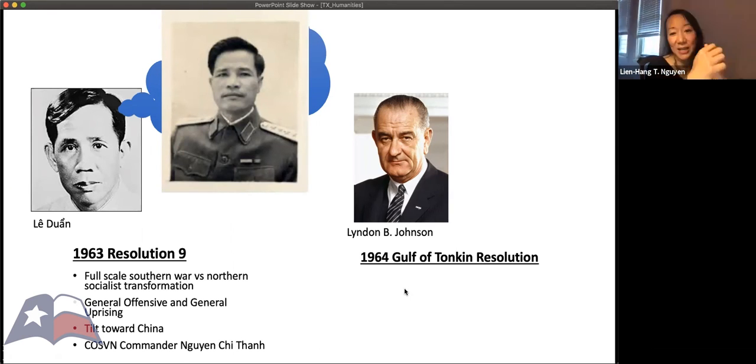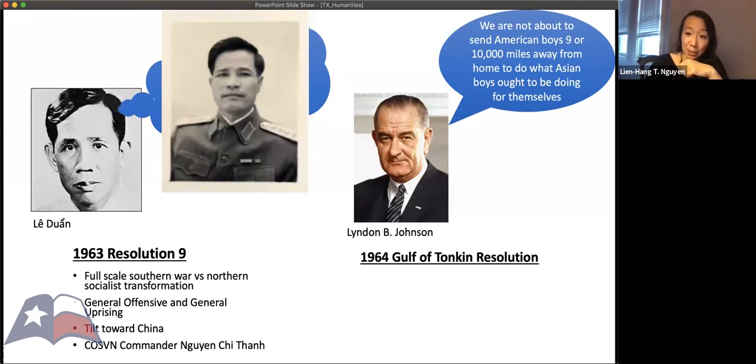He did it at the end of 1963 with Resolution 9. And in this resolution, whereas before the Northern Communist Party leaders were still focused on bringing about a socialist revolution in the DRV, Les Juan was able to get them to just abandon that and focus full scale on the Southern war effort. He was also in doing that basically saying, okay, the South Vietnamese Communist Party, they're not winning the war in the timeframe that we need them to win it by.